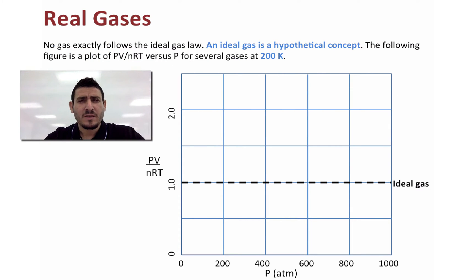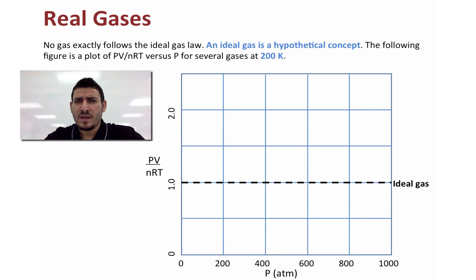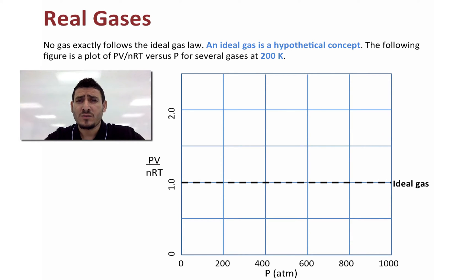Now keep in mind that no gas exactly follows the ideal gas law. An ideal gas is a hypothetical concept. In the following diagram we are going to see plots of real gases at 200 Kelvin for PV over nRT versus P.